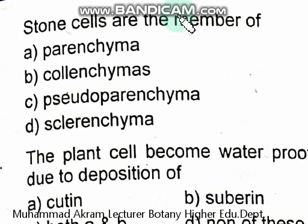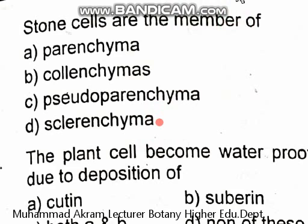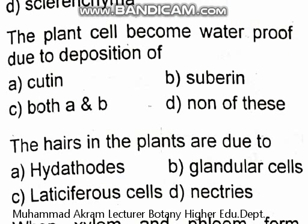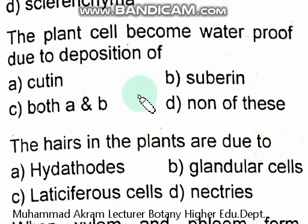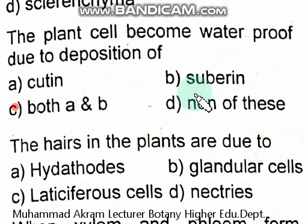Stony cells are members of sclerenchyma. Plant cells become waterproof due to deposition — the right option is cutin and suberin. Both are correct; option C, cutin and suberin, is correct.